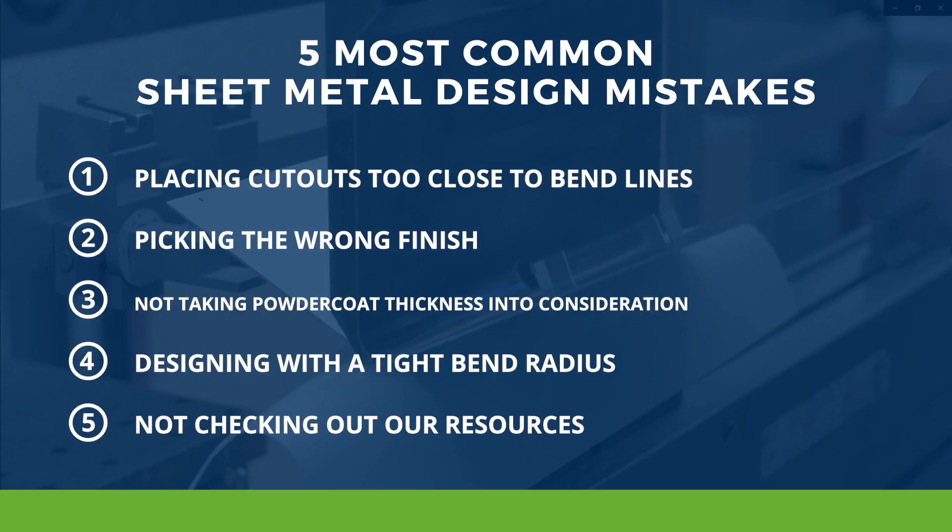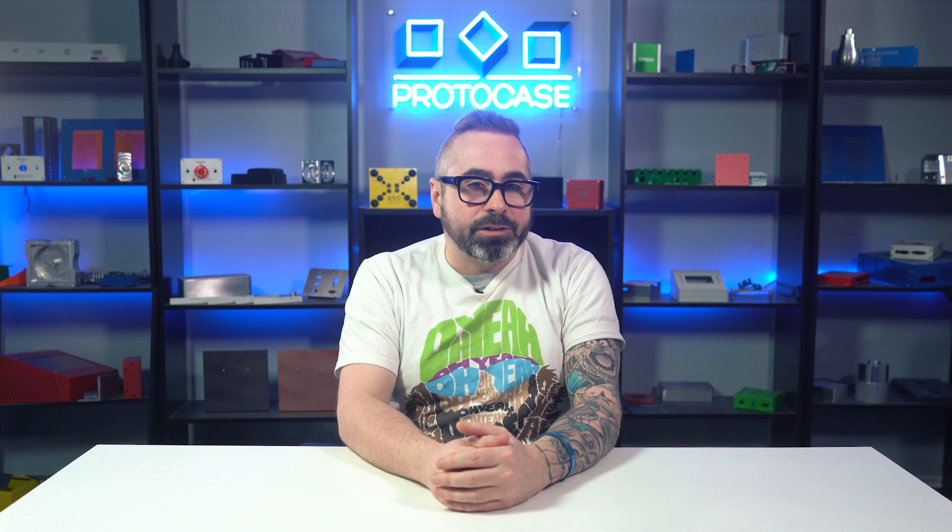For common mistake number three — this is a quick one — it's about how much thickness will be added to your part once powder coat is applied. Once powder coat is applied, you need to allot an additional three to five thousandths of an inch per side on your cutout dimensions. If you don't keep this in mind, your cutouts may not be big enough to fit the required components that you're housing inside.